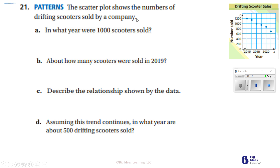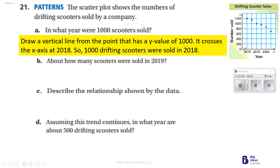Number 20 is for you to do. Number 21: the scatter plot shows the number of drifting scooters sold by a company. As years go by, the numbers sold seem to be going down. In 2010 there were 1,200 drifting scooters sold, and by around 2021–22 only about 700. In what year were 1,000 scooters sold? Drawing a vertical line from the value 1,000, it crosses the x-axis at 2018 — so 1,000 drifting scooters were sold in 2018.